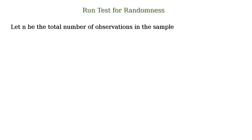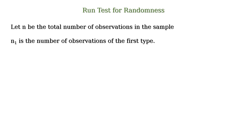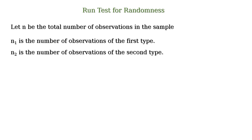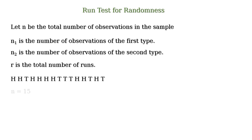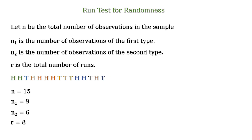Now we need to define certain variables. Let n be the total number of observations in the sample. n1 is the number of observations of the first type. n2 is the number of observations of the second type, and r is the total number of runs. So in our case, n is equal to 15, n1 is equal to 9, n2 is equal to 6, and r is equal to 8.